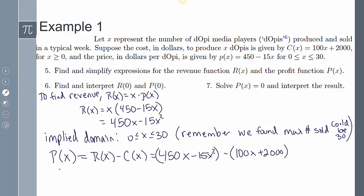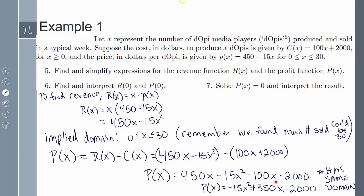And then my profit function by definition is R(x) minus C(x). So here's my R(x) minus my C(x). So now if I clean that up, my profit function is going to be negative 15x squared plus 350x minus 2000. And remember, it has that same domain as we previously talked about.